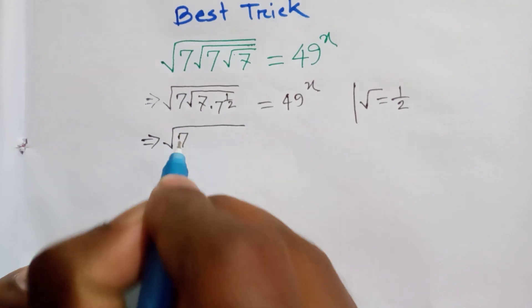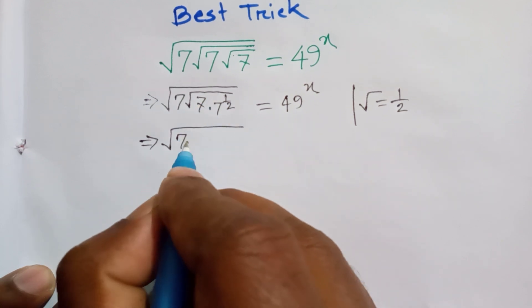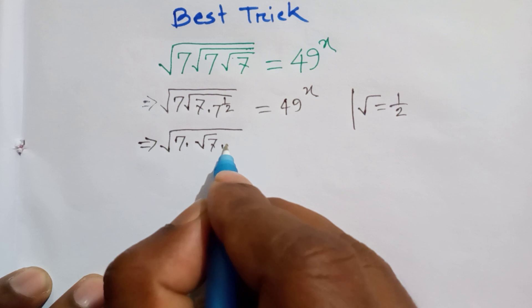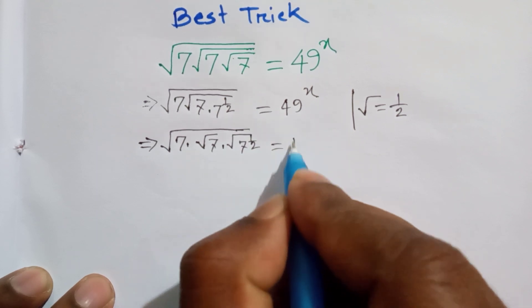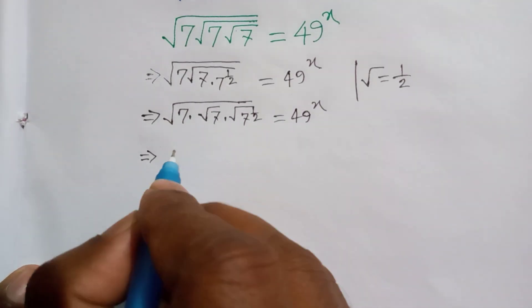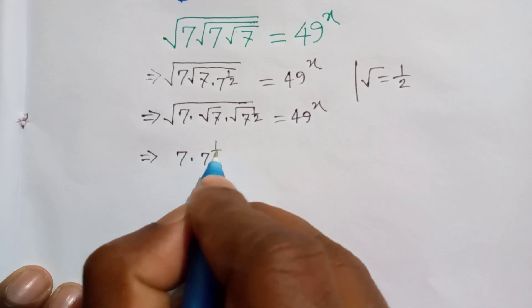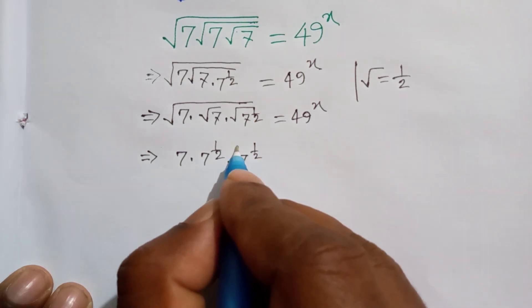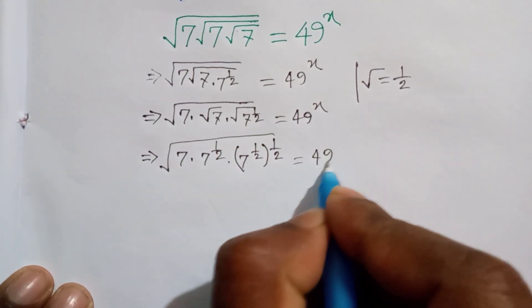Next step: under square root of seven — and this square root we will break, so it can be written as seven times a square root of seven times a square root of seven, to the power one by two, is equal to 49 to the power x. And then seven times it can be written as seven to the power one by two, times seven to the power one by two, and this root can be written as to the power one by two. This square root is equal to 49 to the power x.